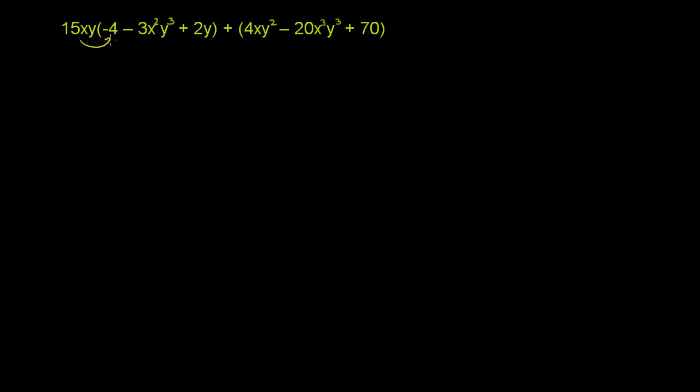So 15xy times negative 4. Well, that's going to be negative 60xy. I just multiplied the 15 times the negative 4 to get the negative 60, and we still have the xy.